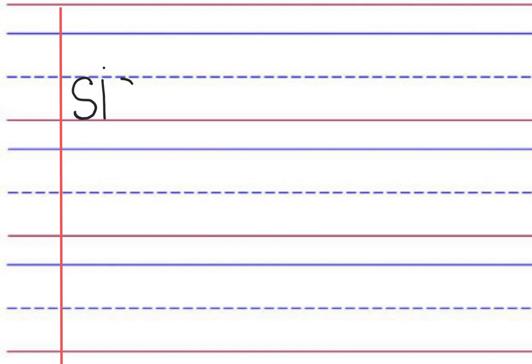We write s, i, s — that's our first syllable, sis. Leave a small space. T, er is our second syllable, ter. We underline our two-letter phonogram. We read sister.